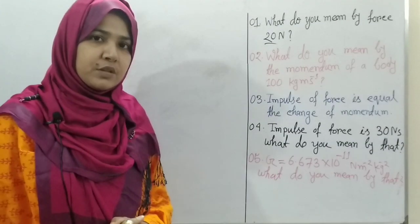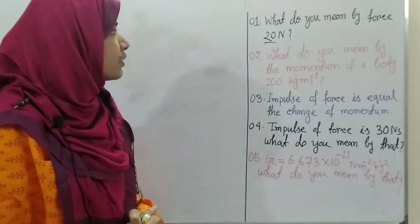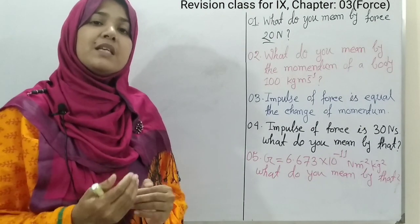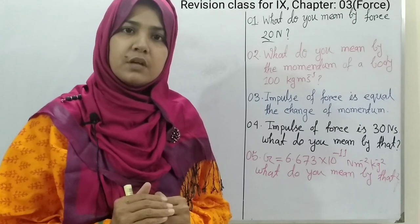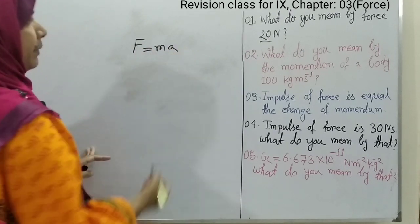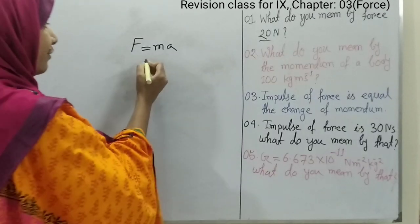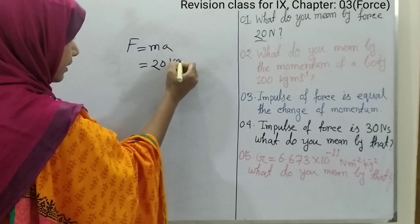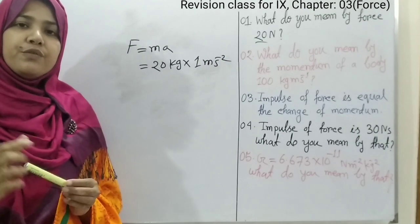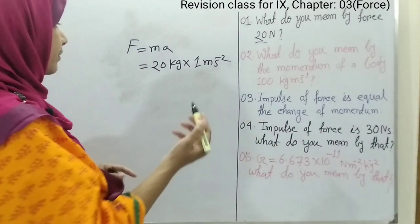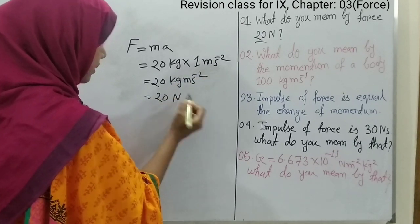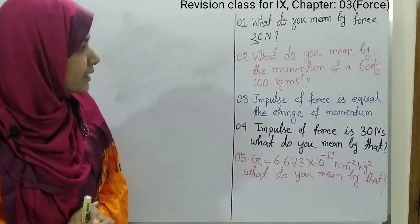Our first question is: what do you mean by force 20 Newton? You know that the external cause which changes or tends to change the state of a matter is called force. From Newton's second law, F equals MA. So if an object of 20 kg is accelerated at 1 meter per second square, then 20 Newton force is exerted on that object — that is 20 kg meter per second square equals 20 Newton.